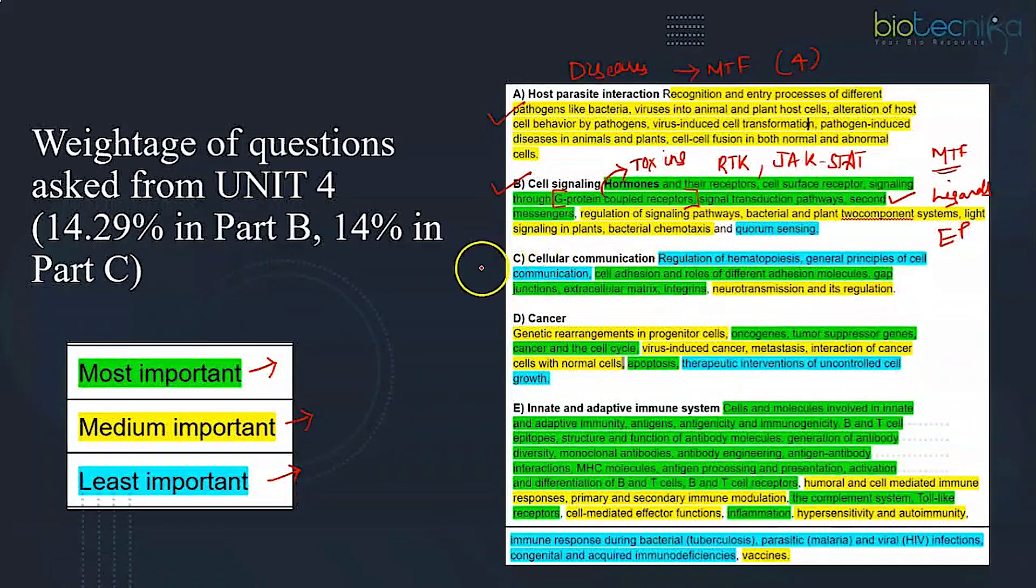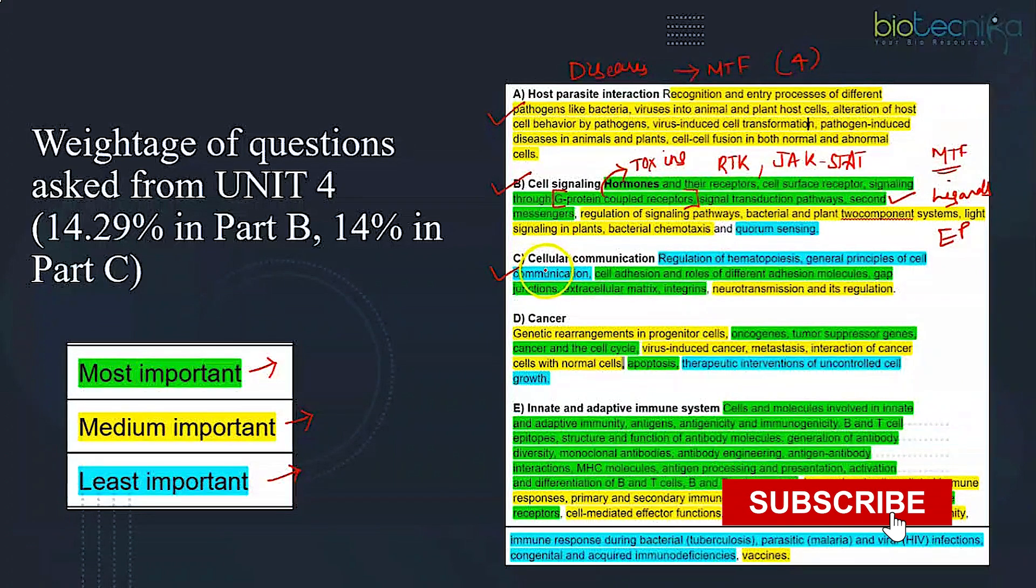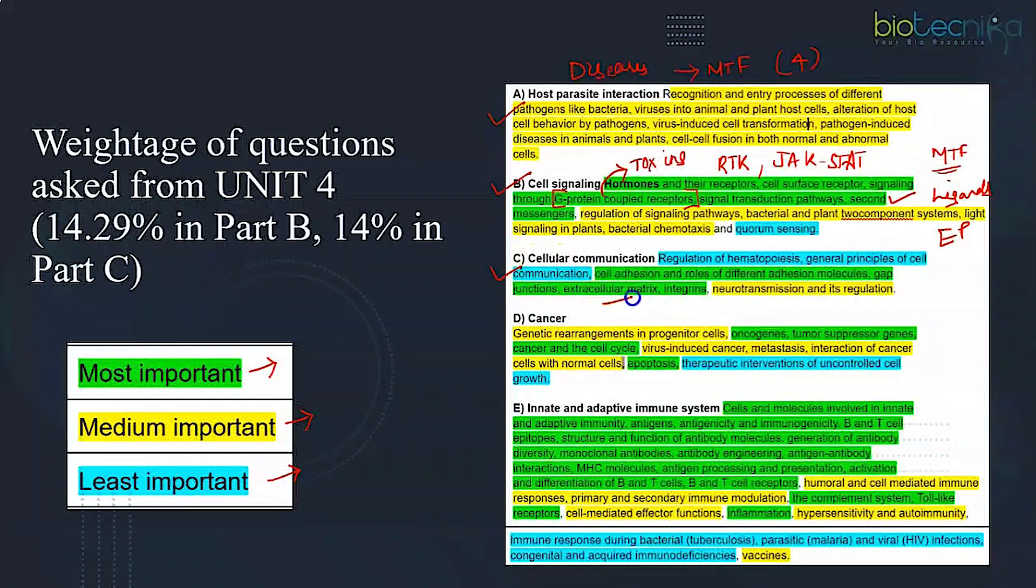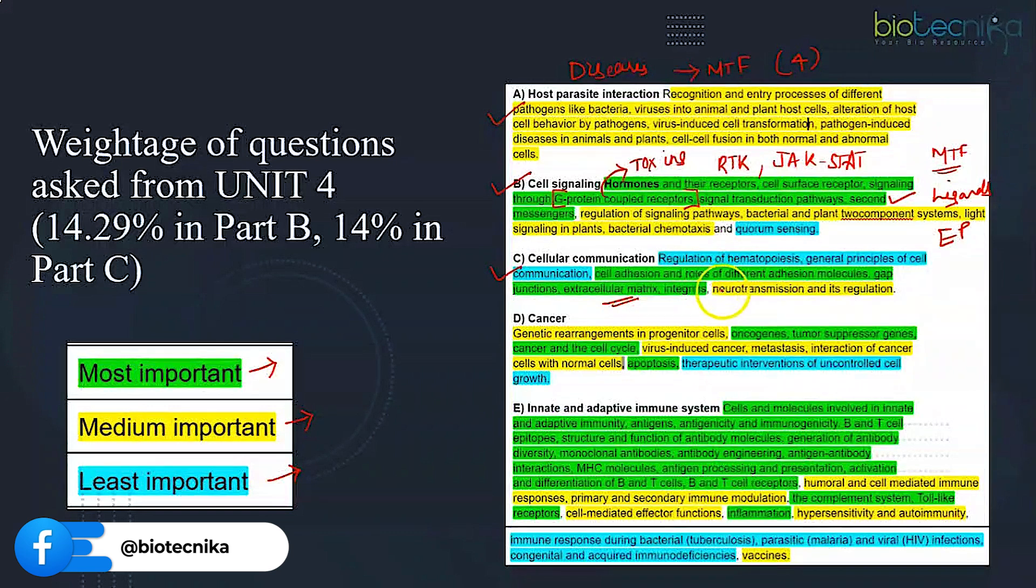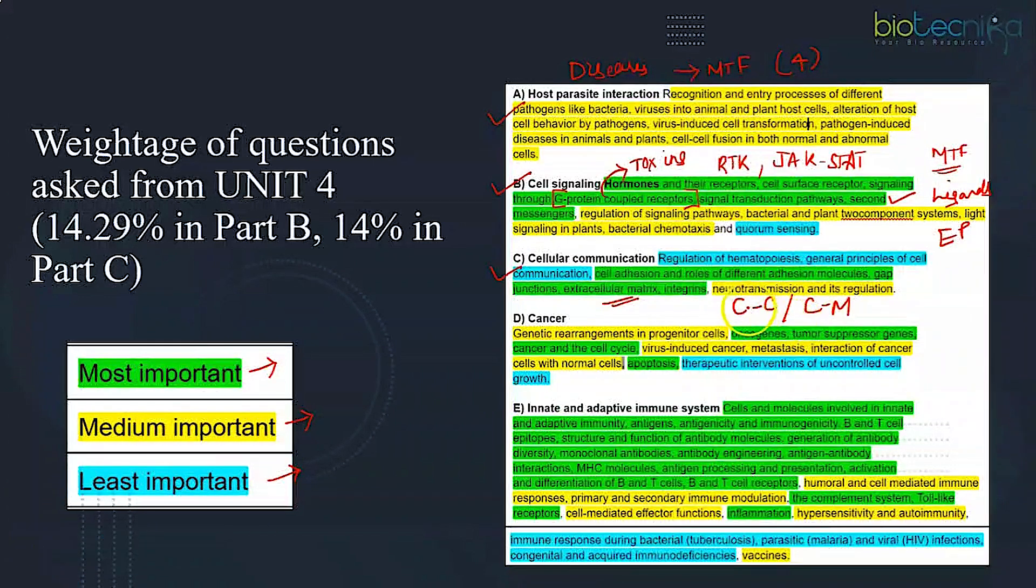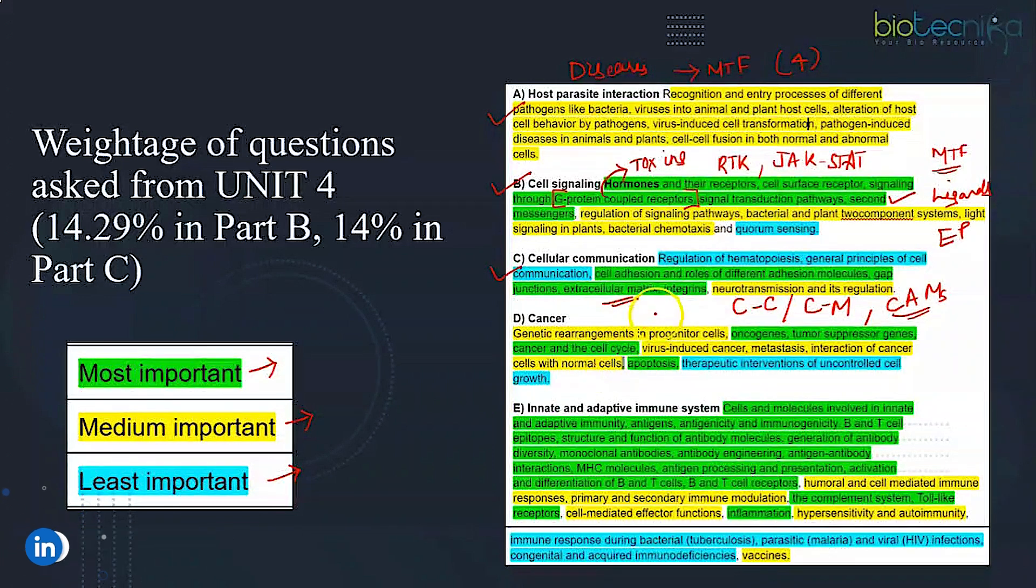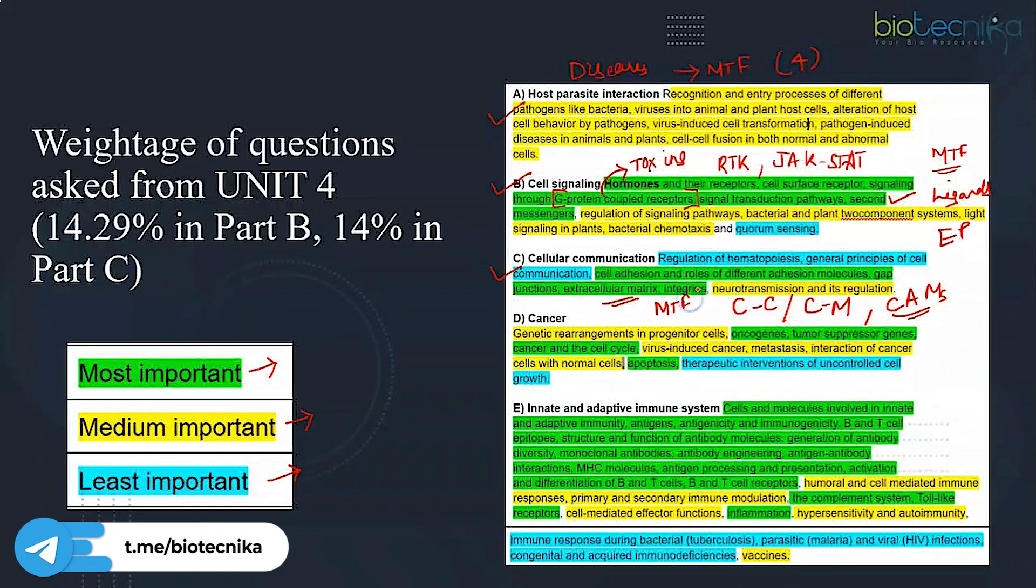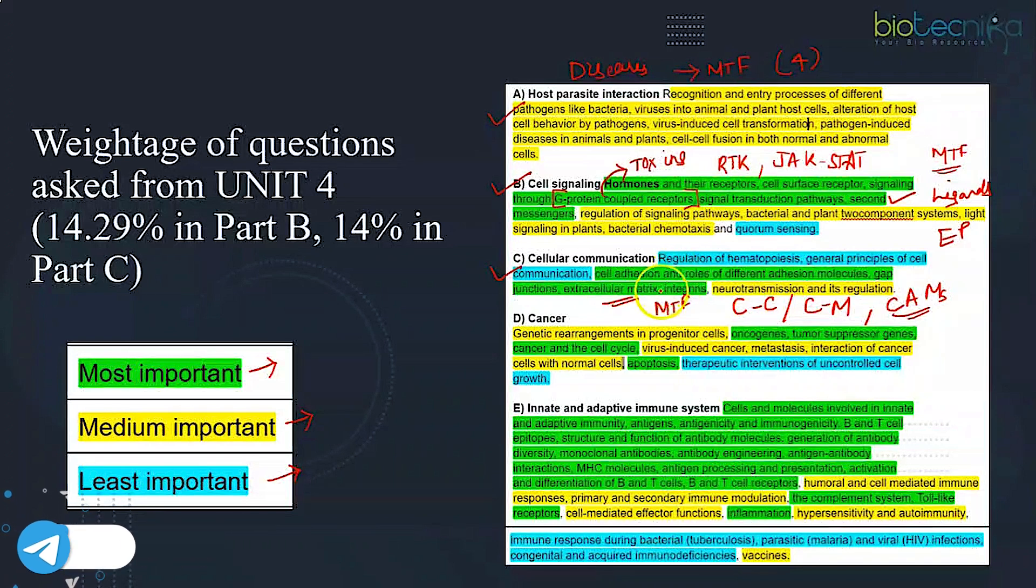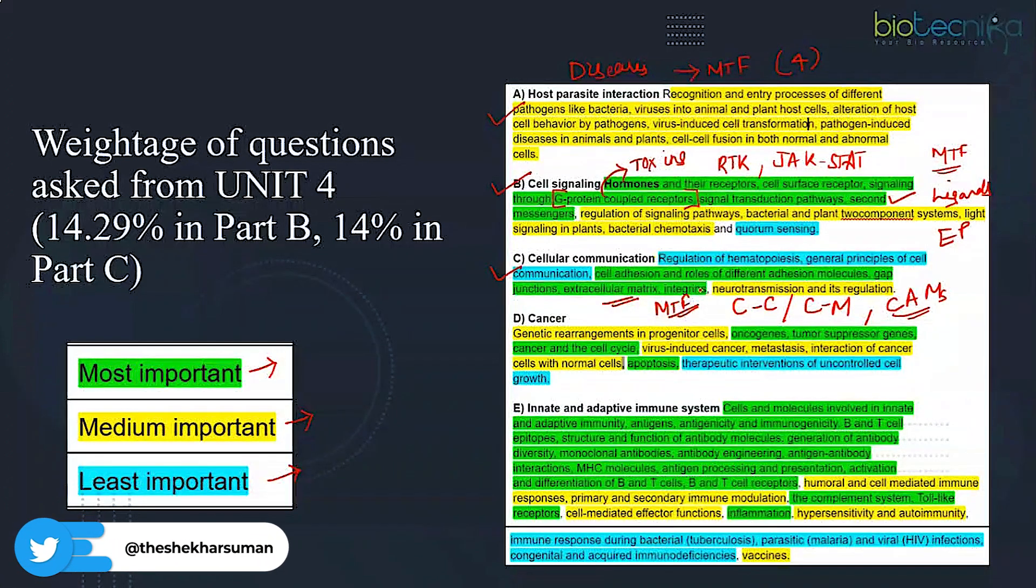Moving on to the third subunit, we have cellular communication. Components of ECM is very important. Apart from that, you might be aware this particular topic is divided into cell-to-cell and cell-to-matrix interaction. Questions do come from here. Apart from that, cell adhesion molecules. Majority of times, match the following questions do come. Experimental had come once upon a time, but nowadays mostly match the following or two marks direct questions.